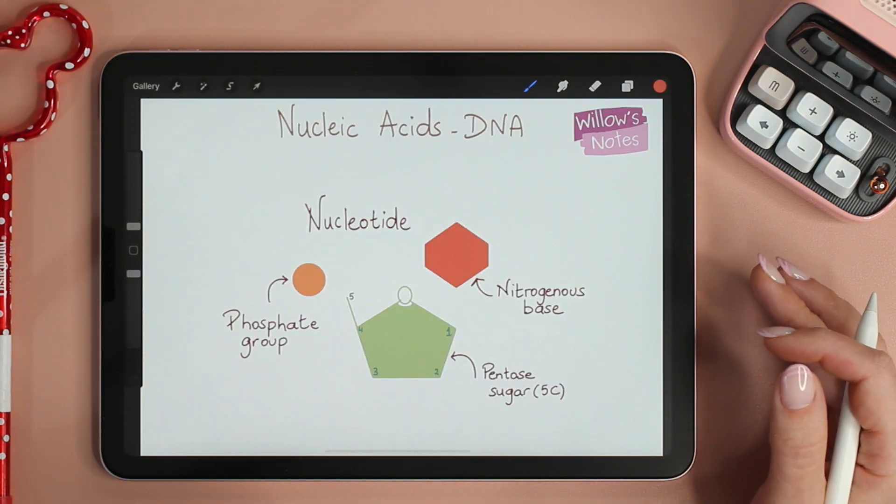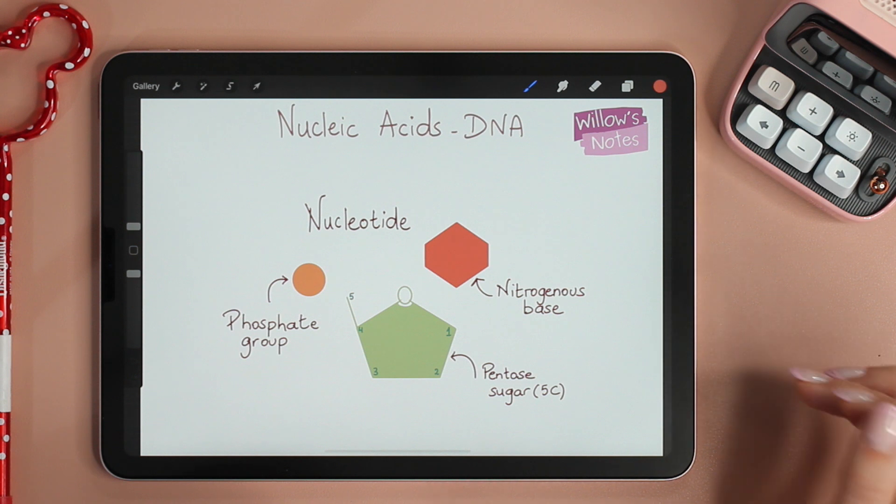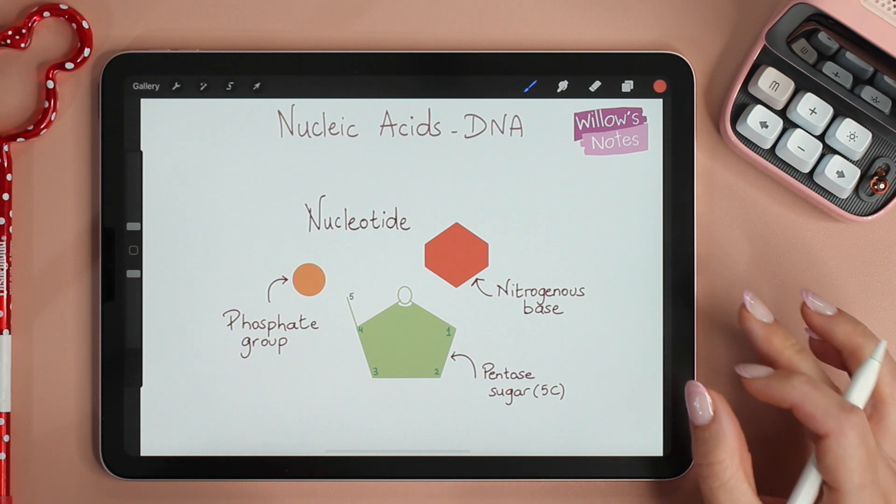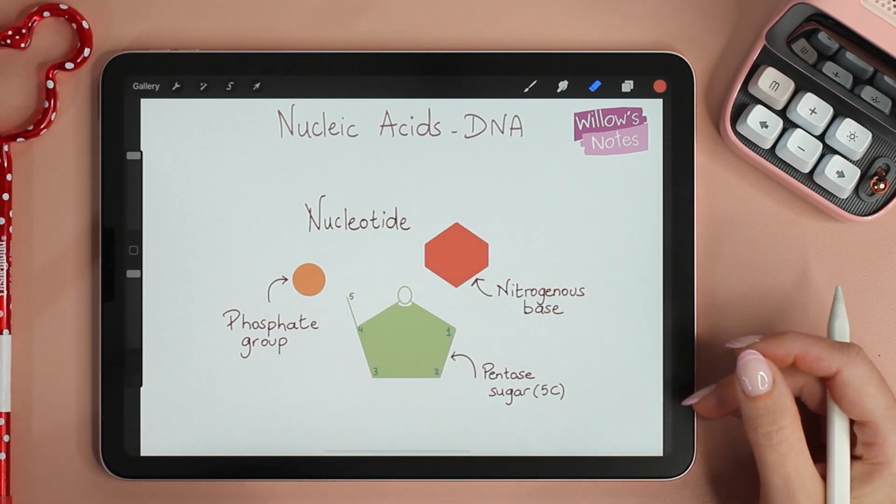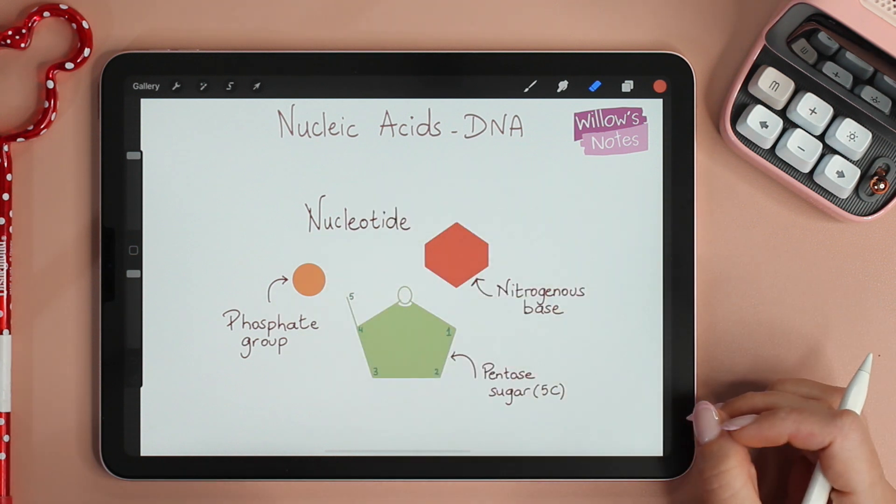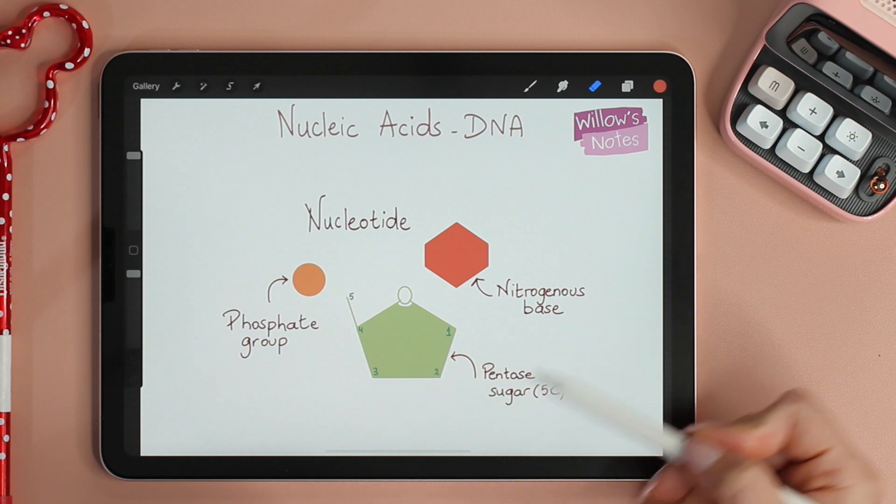Nucleic acids like DNA and RNA, they're polymers. Polymers are made up of repeating units of monomers. Now the monomers of nucleic acids are called nucleotides.